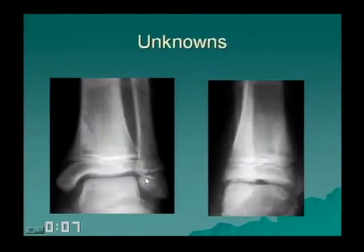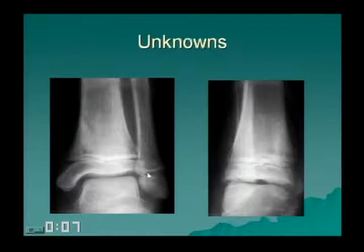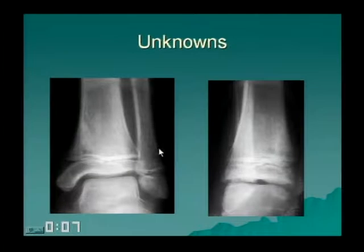Most of the time, leukemic bone lesions have a permeative pattern, similar to lymphoma, reticulum cell sarcoma, rhabdomyosarcoma metastasizing to bone, or any other lymphoproliferative small round cell tumor. Neuroblastoma should not be forgotten in this differential.